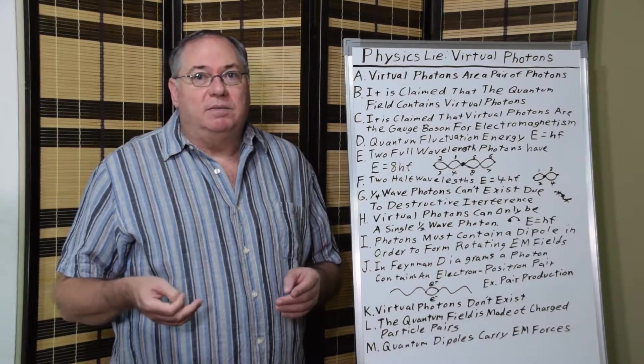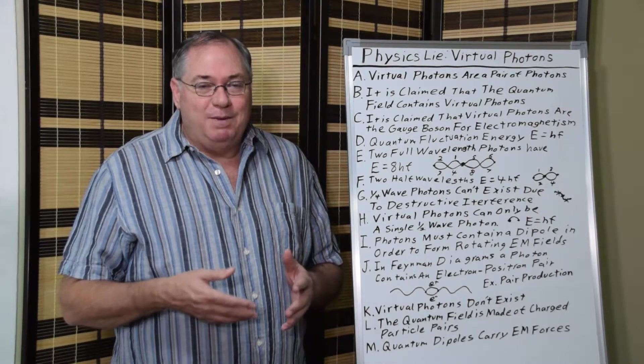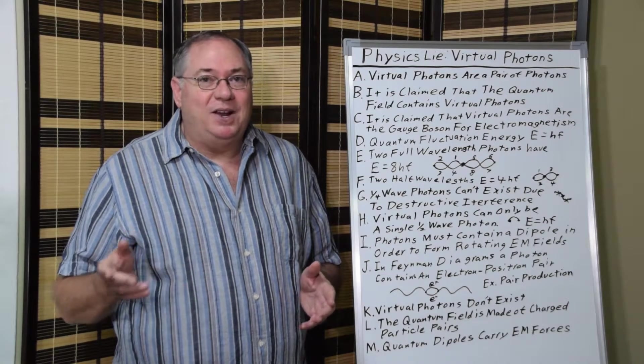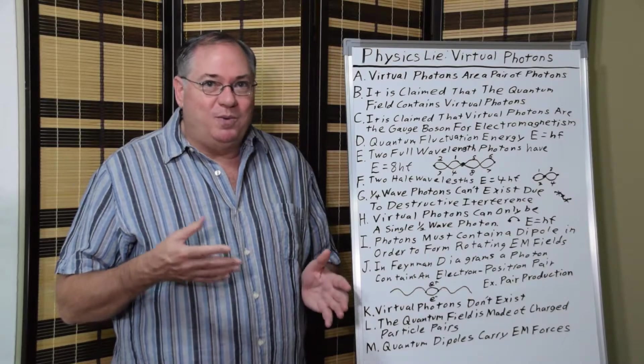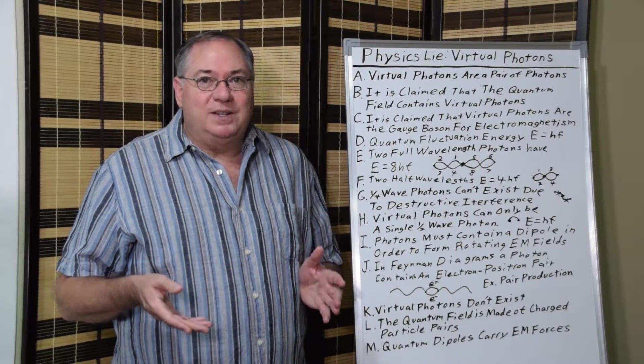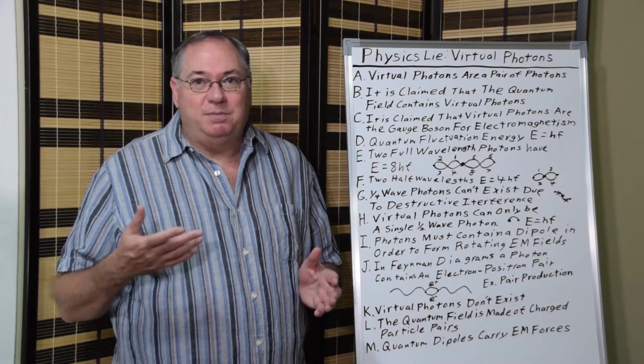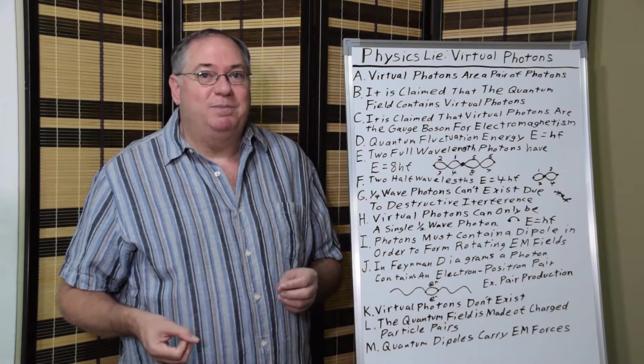In fact, they use quarter wave thickness coatings on lenses in order to prevent reflection within lenses. They use quarter wave coatings of rubber on submarines to prevent sonar signals from getting bounced off, and quarter wave thickness coatings on military aircraft to prevent radar signals from being bounced off.